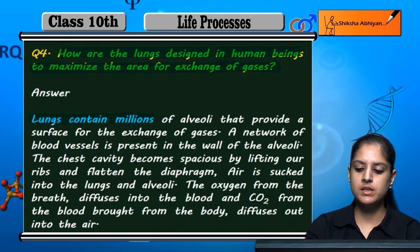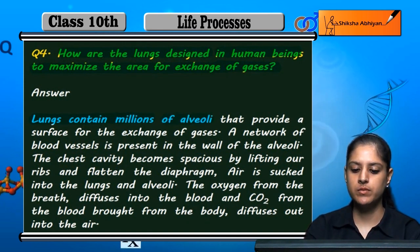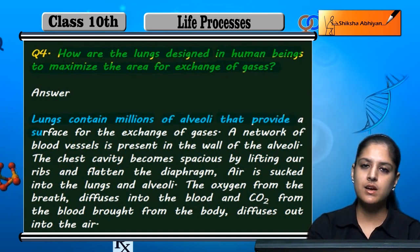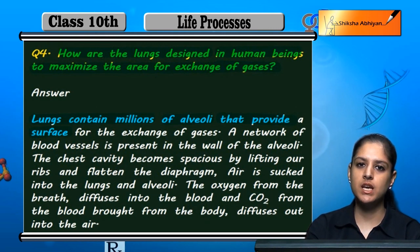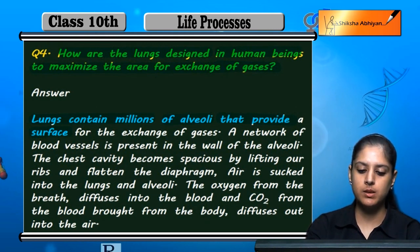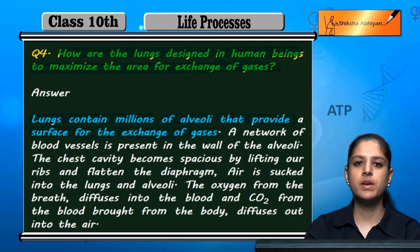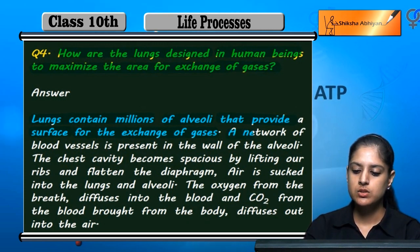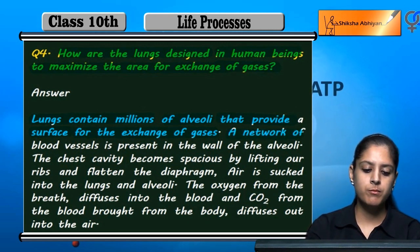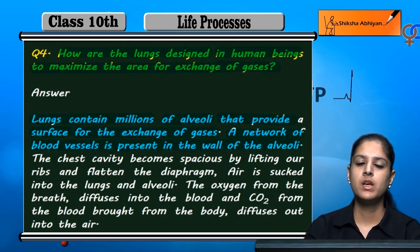In the lungs there are millions of alveoli which provide a surface area that helps the exchange of gases. A network of blood vessels is present in the wall of alveoli.